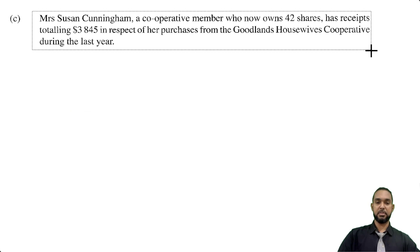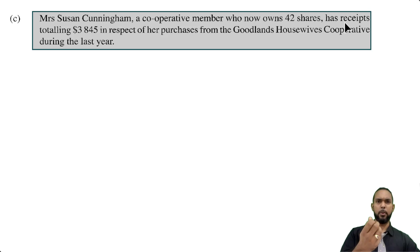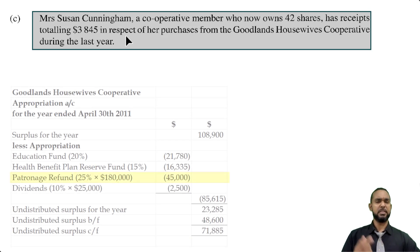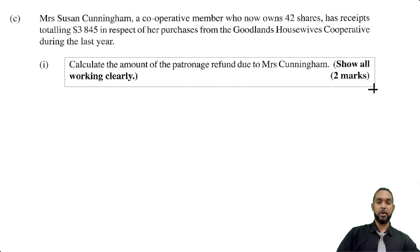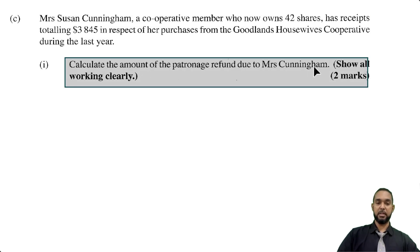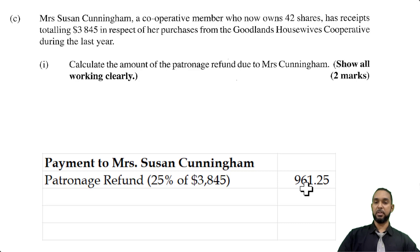Let's take a look at part C. They're telling us that Mrs. Susan Cunningham, a cooperative member who now owns 42 shares, has receipts totaling $3,845 in respect of her purchases from the Goodlands Housewives Cooperative during last year. When she spent money at the cooperative for the whole year, it totaled $3,845 — her receipts are like the things we call bills. In the appropriation account, we gave back people 25% of what they spent, so she's going to get that. She also has 42 shares, which means she's also going to get some dividends. For part one, calculate the amount of the patronage refund due to Mrs. Cunningham — she'll receive a patronage refund of $961.25, which is simply 25% of the amount she spent at the cooperative.